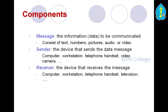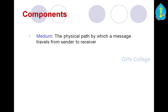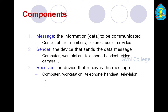The receiver is the second main component — the device that receives the message. It can be a computer, workstation, telephone handset, or television. The third component is the message, which is the very important component connecting sender and receiver. The message is the information or data to be communicated, and it can consist of text, numbers, pictures, audio, or video.